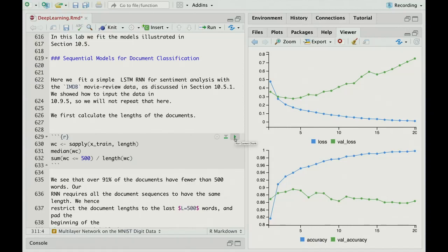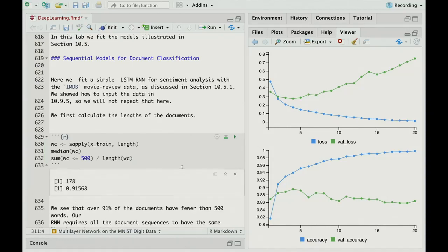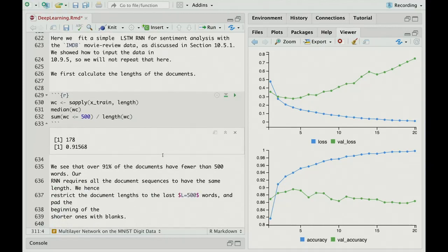So the first thing I do is look at the average length of the documents. This is the word count in the document. So it's about 178, and 91% of them had less than or equal to 500 words. This gives us a sense of the size of the documents, because for recurrent neural networks, we want sequences of the same length. In this case, the sequences are the sequences of words in the document. The feature for each document is going to be the sequences of words, and we want them to be the same length.